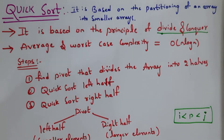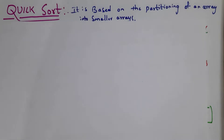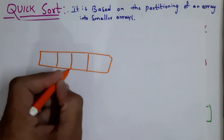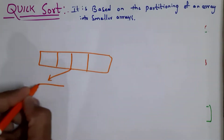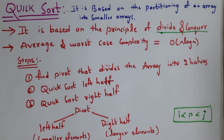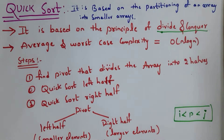When compared to remaining sorting techniques, quicksort is one of the best sorting techniques. It is based on the partitioning of an array into smaller arrays. In quicksort, there are elements in an array — we will break this array into smaller arrays and perform sorting. It is based on the principle of divide and conquer strategy.